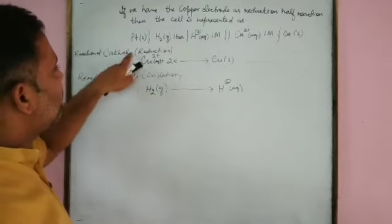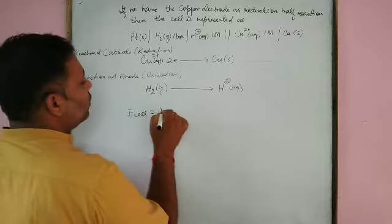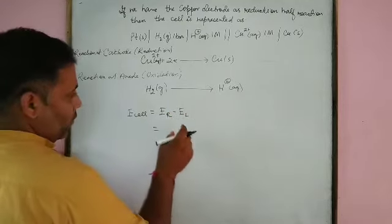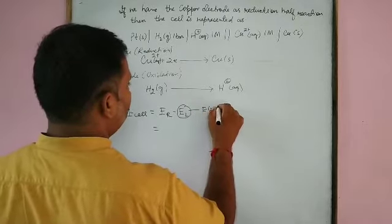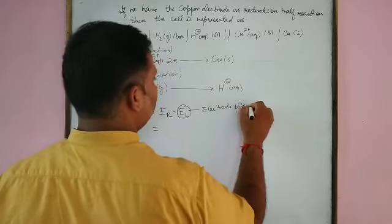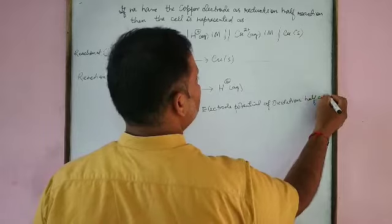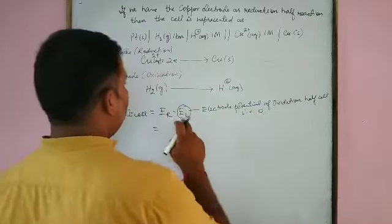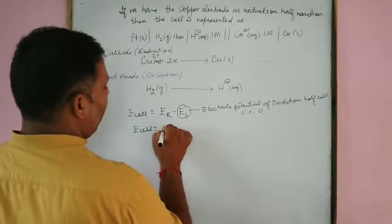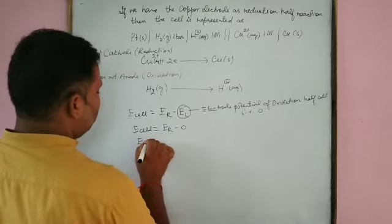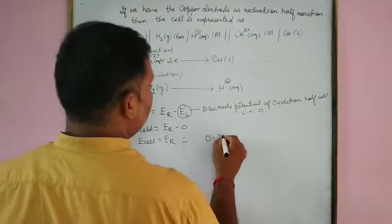The oxidation half is the hydrogen electrode and the reduction half is the copper electrode. When we measure the potential of the cell, E_cell = E_R − E_L. Since E_L, the electrode potential of the oxidation half cell (hydrogen electrode), is zero, we have E_cell = E_R. The potential we observe is 0.34 volt.